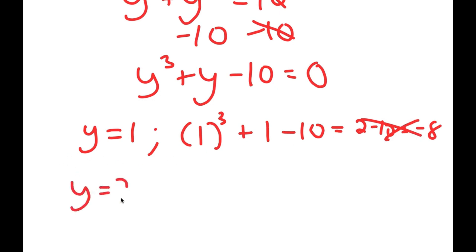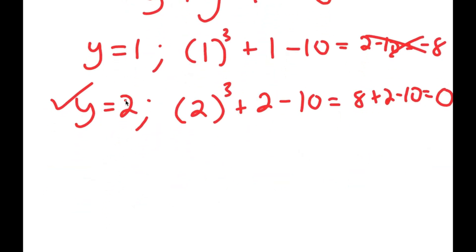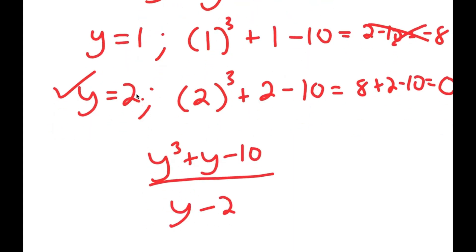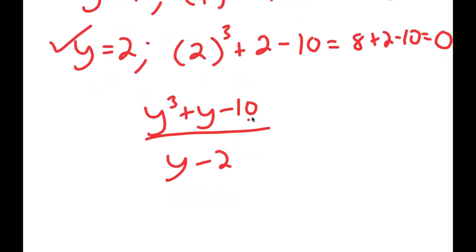Now if y is equal to 2, I get 2 to the power of 3 plus 2 minus 10. 2 to the power of 3 is 8, so I get 8 plus 2 minus 10, which is equal to 10 minus 10, which is equal to 0. So this is right, meaning y equals 2 is a solution. This also means I can divide y to the power of 3 plus y minus 10 by y minus 2, because if I plug in 2 into y minus 2, I get 0. I can find the remaining solutions from this.